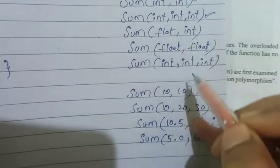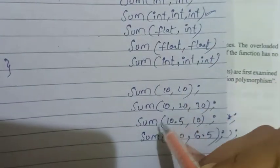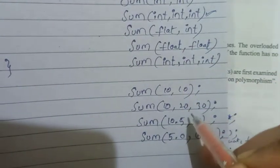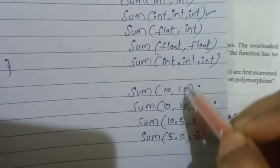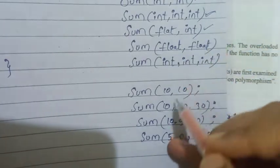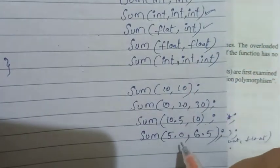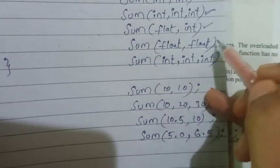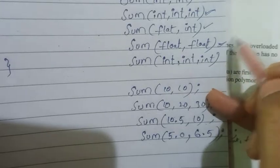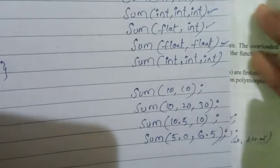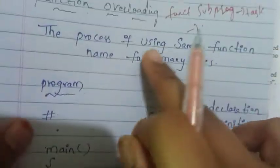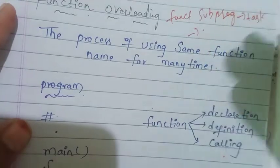So, three integer values are taken. If we have 10 and 5, and they are integer values, that function is called. Next, if we call with 5.0 and 6.5 — float values — the corresponding float function is called. The function name is the same, but which function executes depends on the arguments.